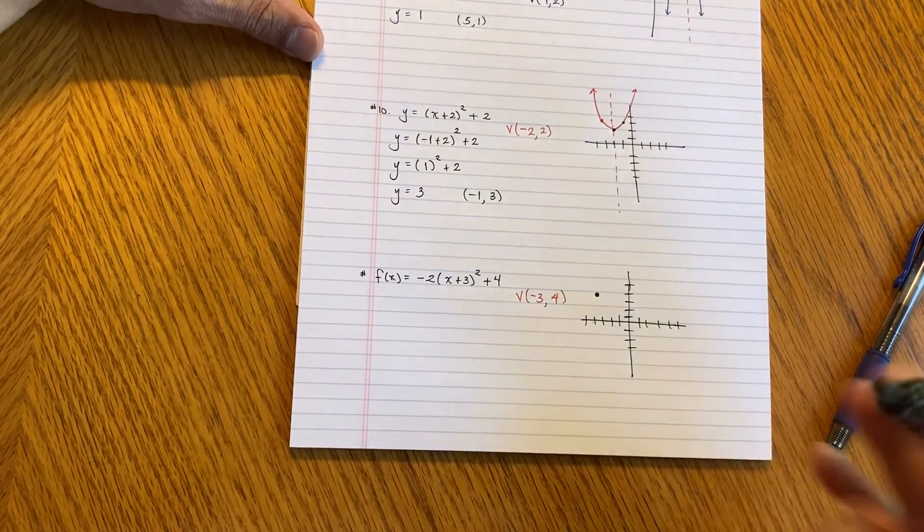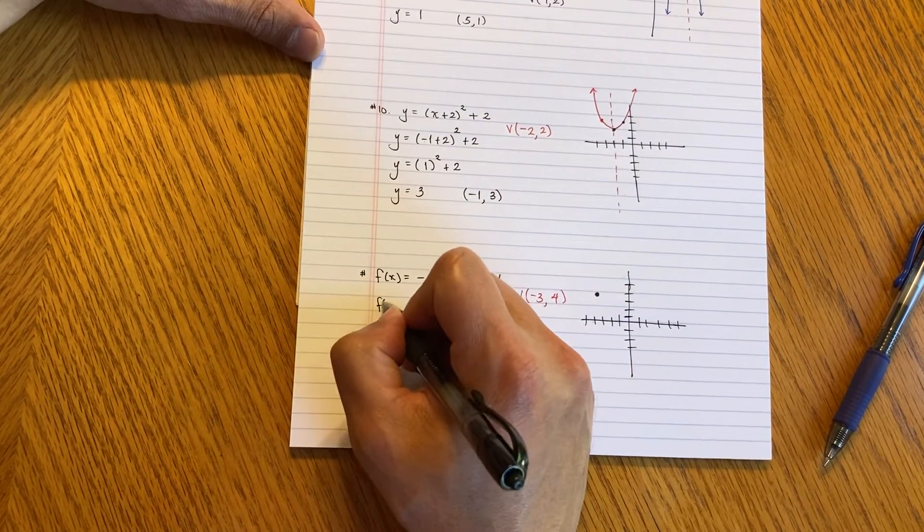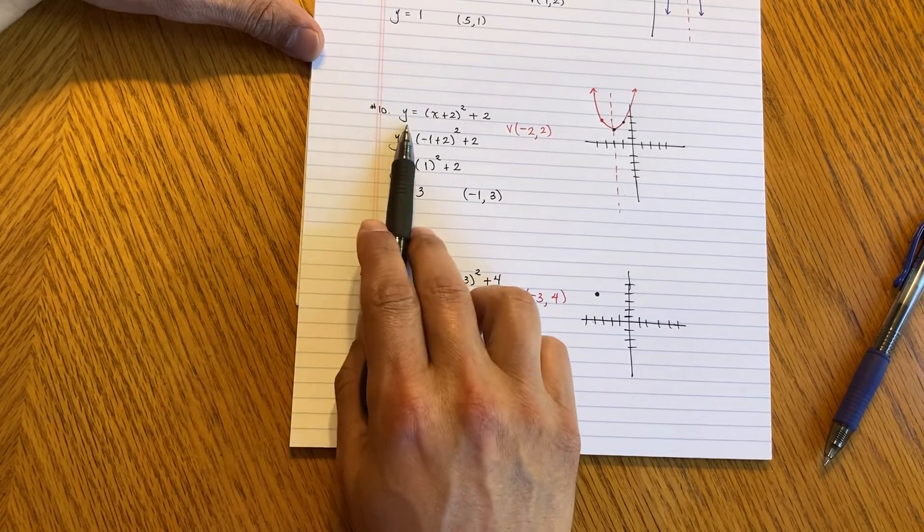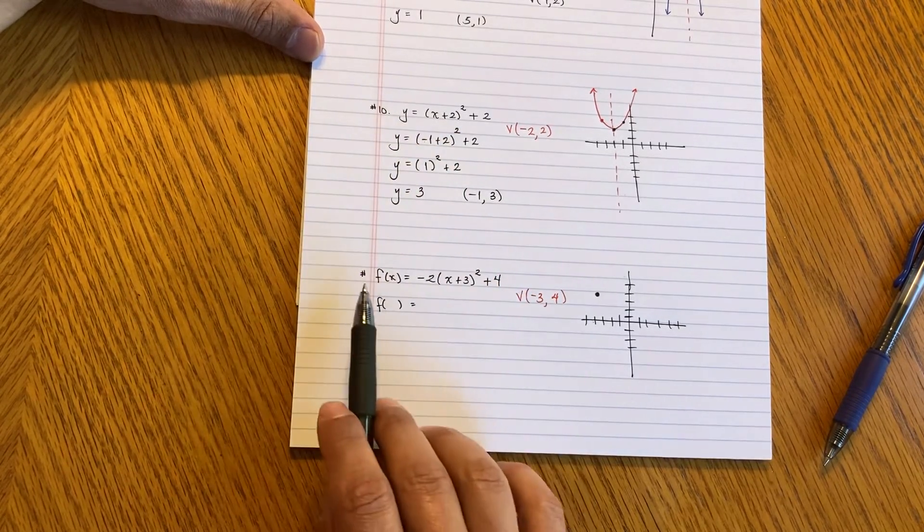Now, what do I do? I need to pick a point. So you notice that this one says F of X. And that's okay. This is the same as if it was Y equals.